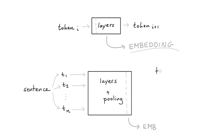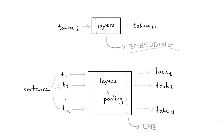Instead of training on just one task like next token prediction, if you want general sentence embeddings it might be a good idea to also add other tasks. Maybe we have a dataset of sentiments and want an embedding that can predict sentiment, or perhaps we have question-answer pairs. You might get more general embeddings if you attach to not one but many different tasks. Because sentences can be much more expressive than single words, you'll need more than one task to capture all of that possible expressiveness.